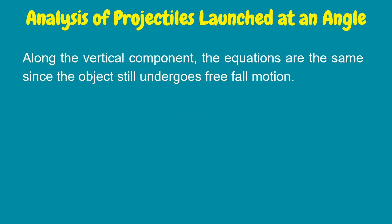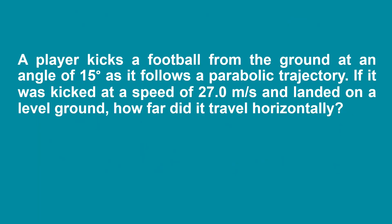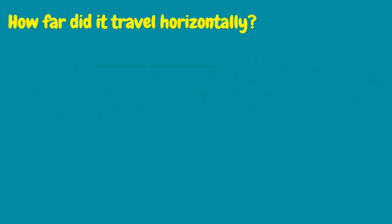Along the vertical component, the equations are the same since the object still undergoes free-fall motion. To apply one of the working equations, let's answer this sample problem. A player kicks a football from the ground at an angle of 15 degrees as it follows a parabolic trajectory. If it was kicked at a speed of 27 meters per second and landed on a level ground, how far did it travel horizontally?